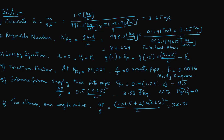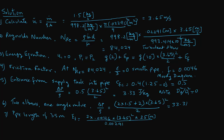The remaining frictional term is for the total pipe length of 35 meters. Using the pipe friction formula: ef = 2 × 0.0046 × (3.65²) × 35 / 0.02291, which gives us 187.2 joules per kilogram.